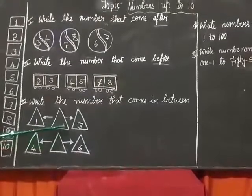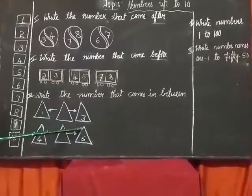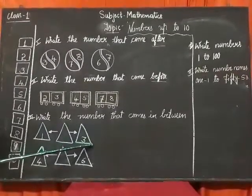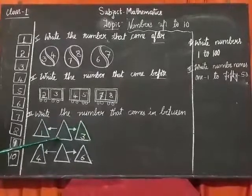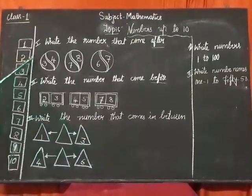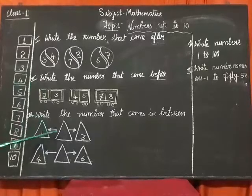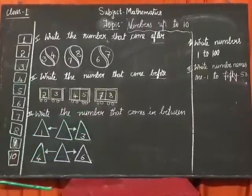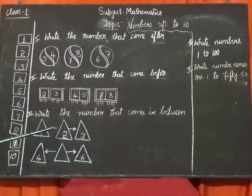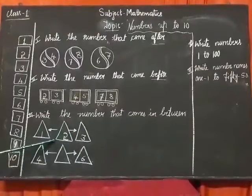Now we will learn about 'numbers between.' Here you find 3 triangles. In the first triangle, the number written is 1, and in the last triangle, the number written is 3. The middle triangle is empty. What comes between 1 and 3? 1, 2, 3. What comes after 1 and before 3? Yes, you are right: 2. Write number 2 in the empty triangle. This is the 'between' number.